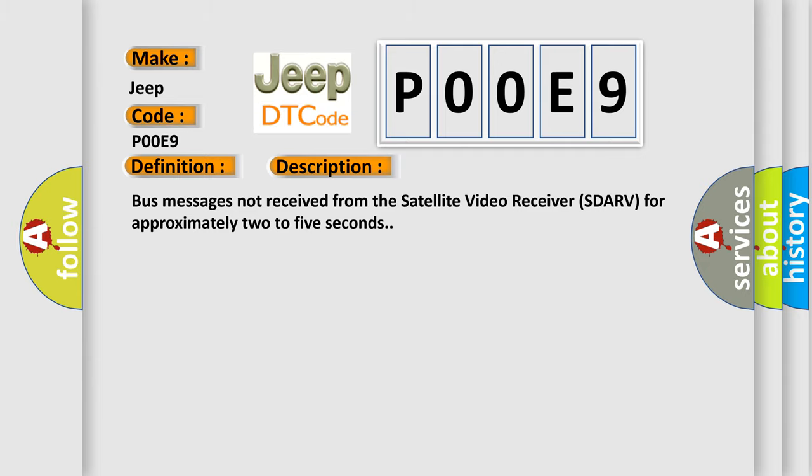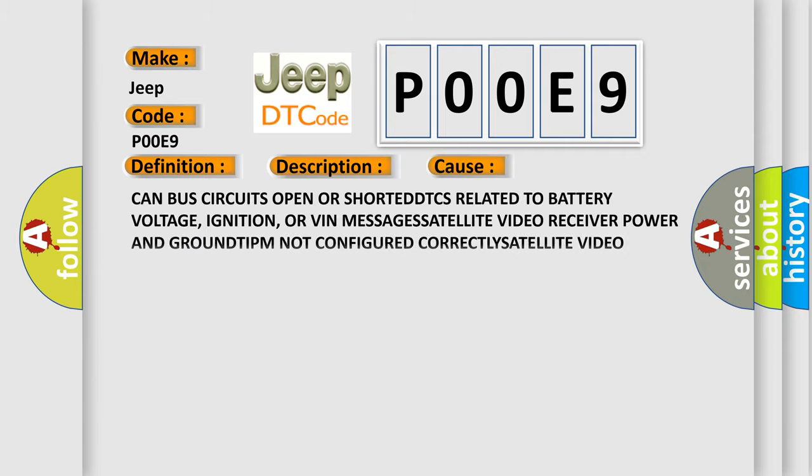This diagnostic error occurs most often in these cases: CAN bus circuits open or shorted, DTCs related to battery voltage, ignition, or VIN messages, satellite video receiver power and ground, IPM not configured correctly, satellite video receiver module that set the DTC.